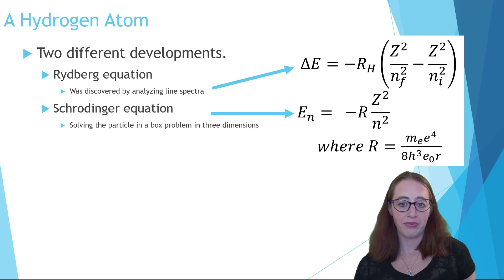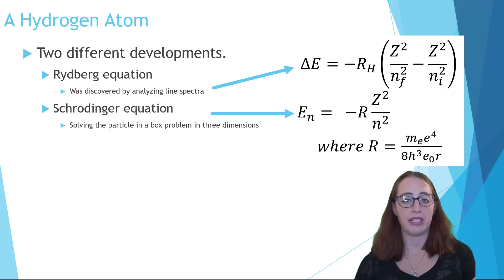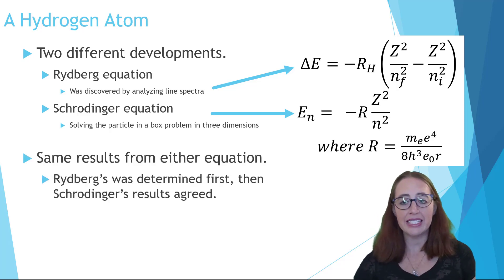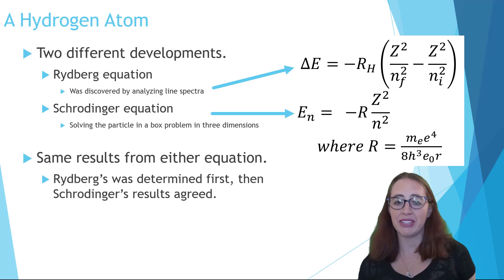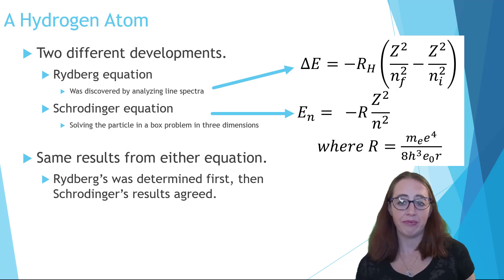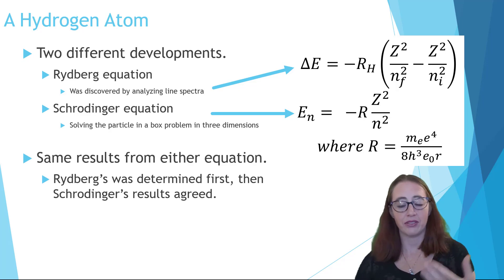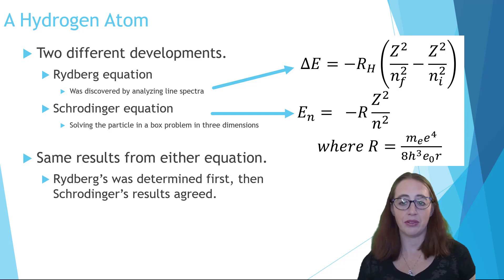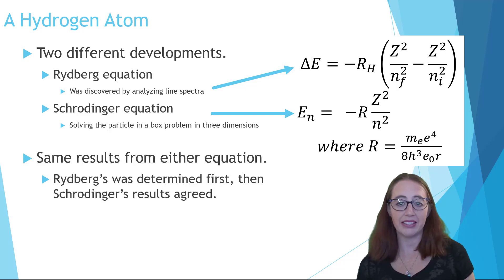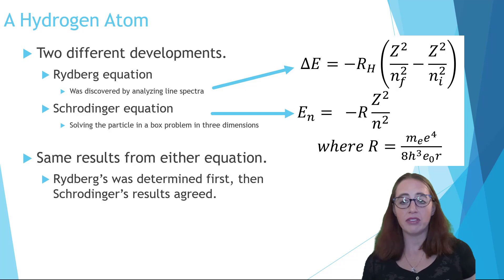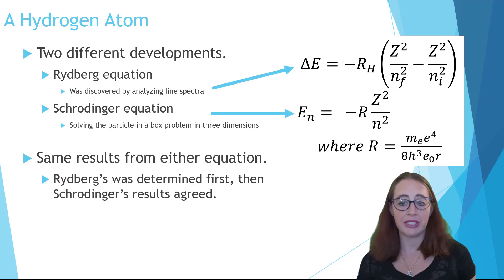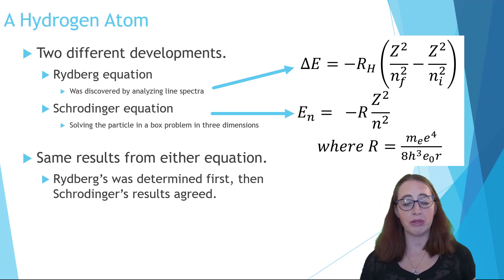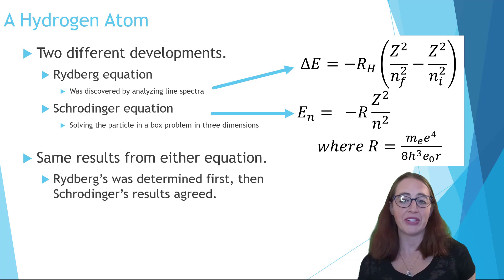The Rydberg equation was developed experimentally by analyzing patterns of light emitted after electrons were excited. Electrons would come back down and those patterns of light could be observed. By carefully comparing different spectra, the Rydberg equation and the different energy levels were determined.